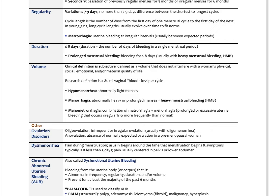Hypomenorrhea is abnormally light menses. Menorrhagia is abnormally heavy or prolonged menses, also known as heavy menstrual bleeding. Menometrorrhagia is a combination of metrorrhagia and menorrhagia — so prolonged or excessive uterine bleeding that occurs irregularly and more frequently than normal. Just keep those different terms straight, as that's going to help as we go through some of this.